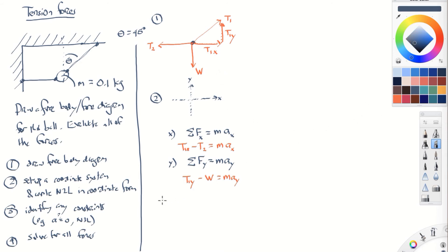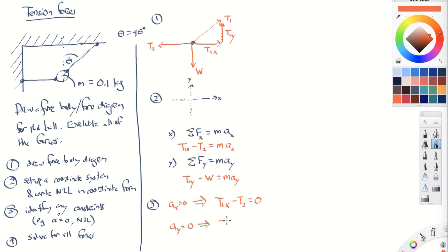Step three: identify constraints. Since this ball is sitting still, its acceleration must be zero in both the x and y directions — ax equals zero and ay equals zero. That means the x equation becomes T1x minus T2 equals zero, and the y equation becomes T1y minus W equals zero. Those are two constraints that simplify our equations.